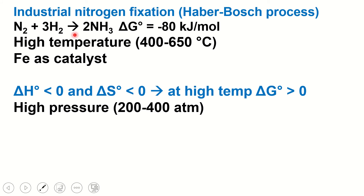Here's the balanced equation for what goes on in the Haber-Bosch process: dinitrogen gas and dihydrogen gas are combined to form ammonia gas. This has an overall free energy under the conditions of the Haber-Bosch process of negative 80 kilojoules per mole. The conditions are very important here — very high temperatures, 400 to 650 degrees C, and iron is used as a catalyst. These are to overcome high activation barriers, improving the kinetics.